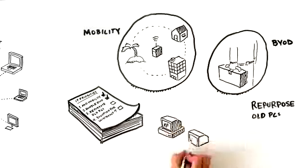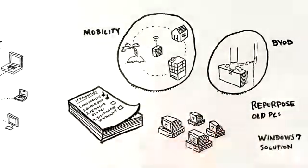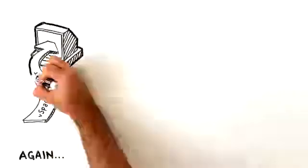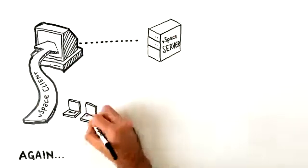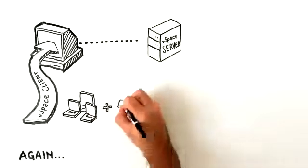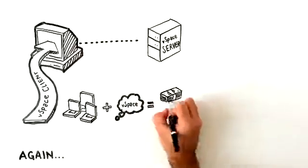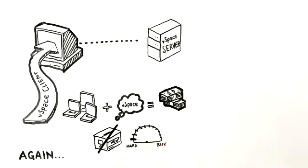Dust off those old PCs running XP and save the ones you thought you would have to replace or upgrade to run Windows 7. Just install vSpace Client for Windows and connect to vSpace server. By using what you already have and what you already know how to manage, you just saved your company a ton of money that you would have had to spend on new devices, and you just avoided a major hassle for yourself to get it all in place too.